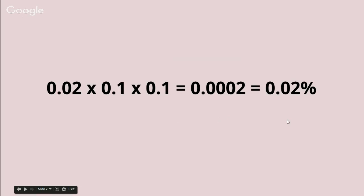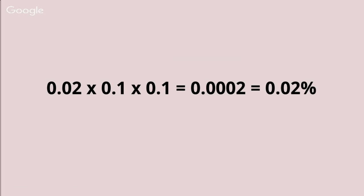If we do the math, a plant can only fixate about 0.2% of the original energy source coming in. The next consumer is only going to get about 10% of the plant's energy, and the next consumer only 10% of that. If we multiply it out, the energy available to the top-level consumer in this food chain would only be 0.02% of the original energy source. So as we go up the food chain, or up in trophic levels, there is a huge amount of energy loss.